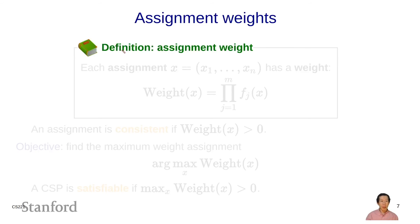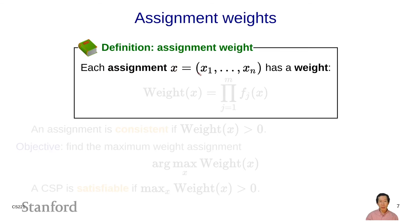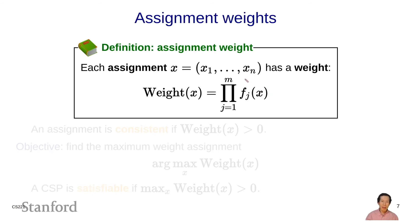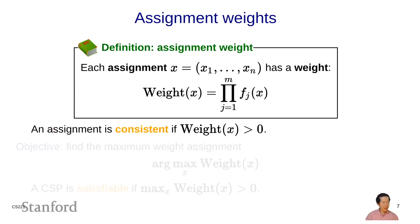Here is the general definition of assignment weight. An assignment x = (x1, ..., xn) has a weight defined as the product over all factors fj of fj applied to the assignment. Even though each factor only depends on a subset of variables, I'm simplifying notation by passing the entire assignment; in practice I would only pass in the variables in the scope of fj. An assignment is consistent if its weight is greater than zero. A weight can't be negative since all factors return non-negative numbers, so a weight of zero means the assignment is inconsistent.